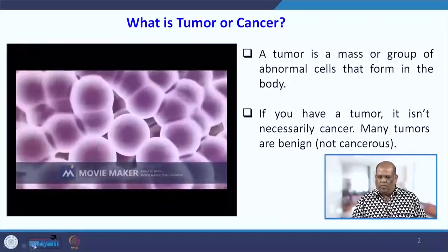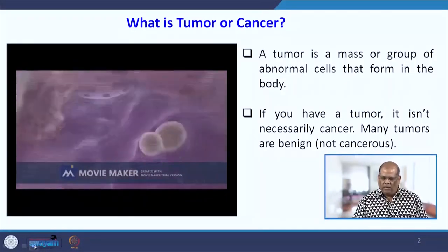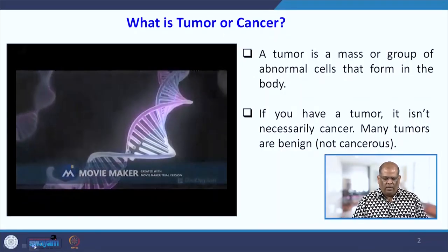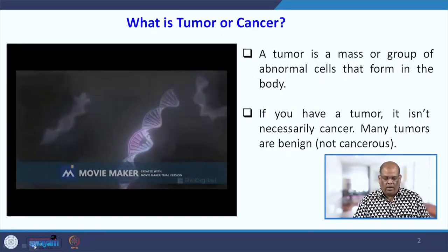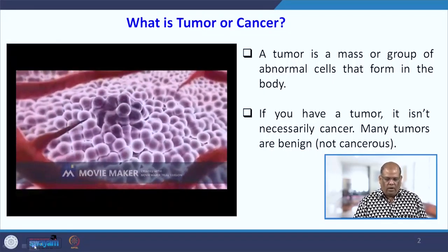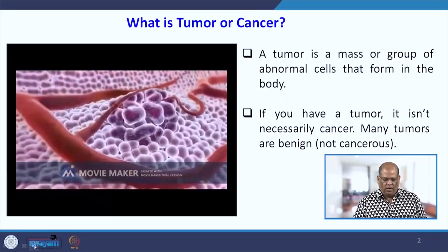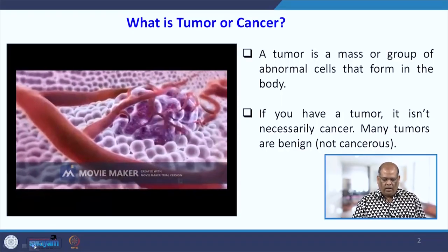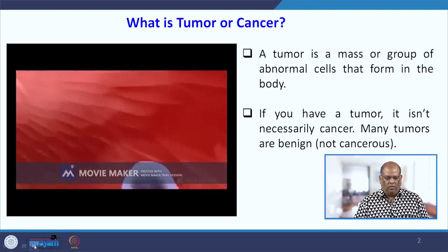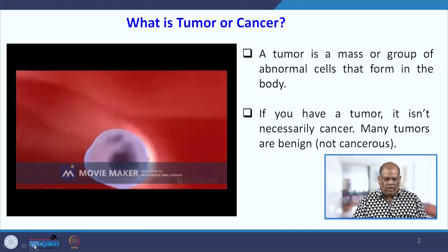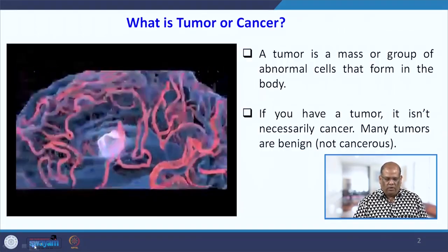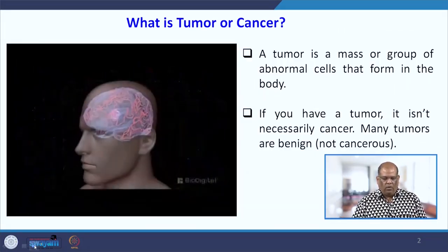Basically, a tumor is a mass or group of abnormal cells that forms in the body, and that takes place because of some problem with the DNA structure whose reason is not known. As you can see in the video, the cells are growing very fast. That is what a tumor is — they try to connect with the blood vessels, either generating them or connecting through them to send malignant tumor cells to other parts of the body.